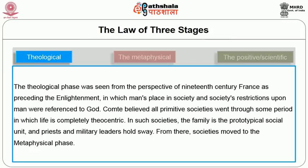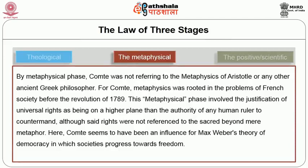Most of these societies then moved to the metaphysical phase. For Comte, metaphysics was not referring to the metaphysics of Aristotle or Greek philosophy; rather, it was rooted in the problem of French society before the revolution of 1789. According to him, this metaphysical phase involved the justification of universal rights as being on a higher plane than the authority of any human ruler, although those rights were not referenced to the sacred. Here Comte seems to have been an influence for Max Weber's later theory of democracy, in which societies progressed towards freedom.